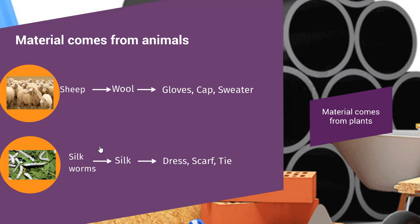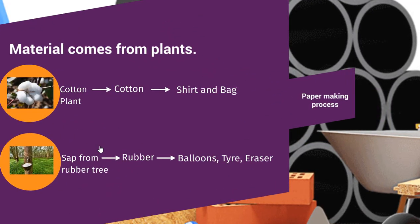Material comes from animals. Sweaters, gloves are made from wool — wool comes from sheep. Ties and dresses are made from silk — silk comes from silkworms. Material also comes from plants. Bags and shirts are made from cotton — cotton comes from the cotton plant.